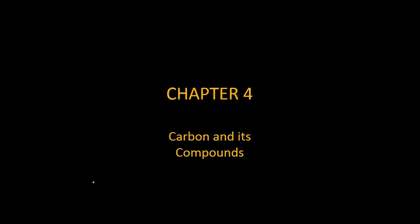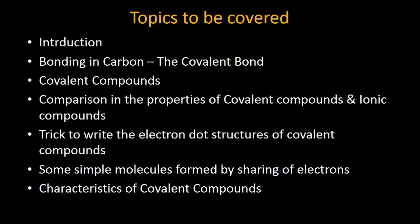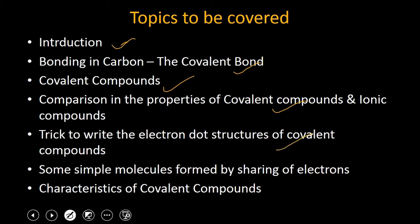This is chapter 4 of our NCERT textbook. First of all, we will see the general introduction. After that, we will study about bonding in carbon and what is a covalent bond. Then we will study covalent compounds, compare them with ionic compounds. I will tell you a trick to write the electron dot structure of covalent compounds without any mistake. Then we will study some simple molecules formed by sharing of electrons, and finally the characteristics of covalent compounds.